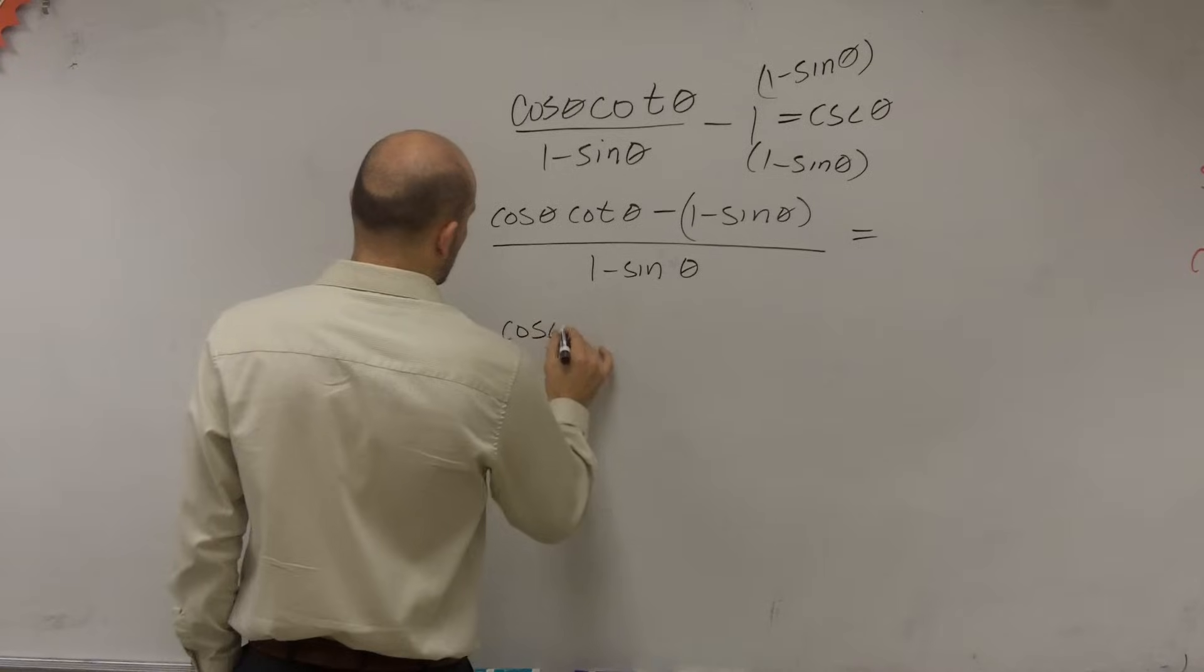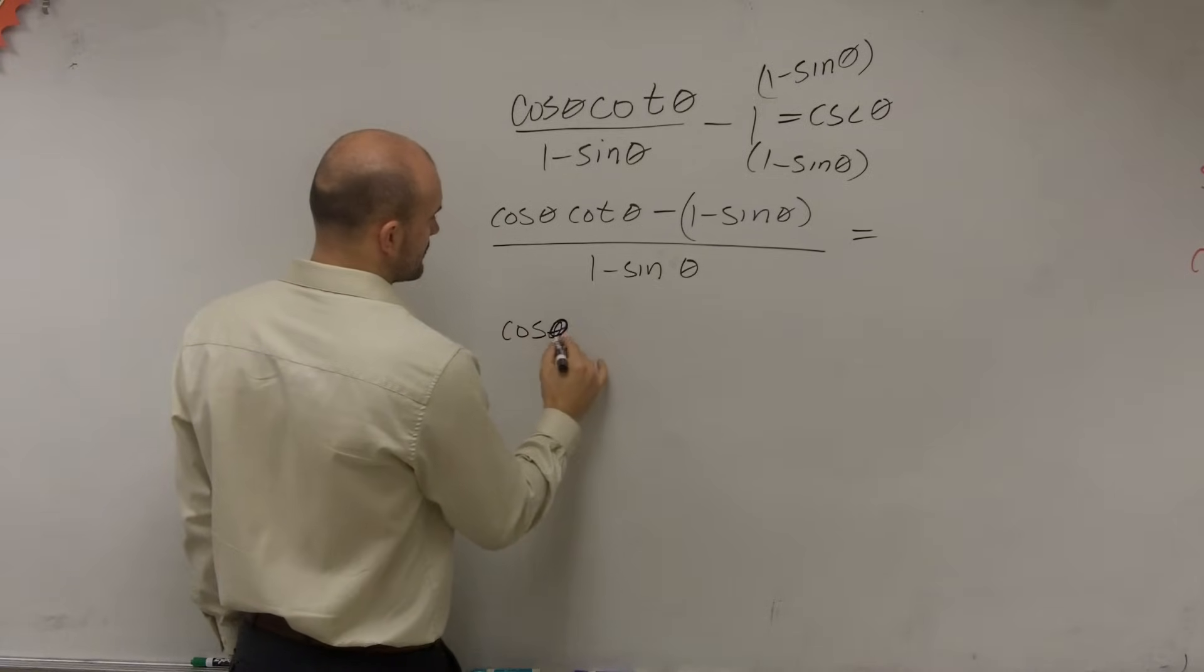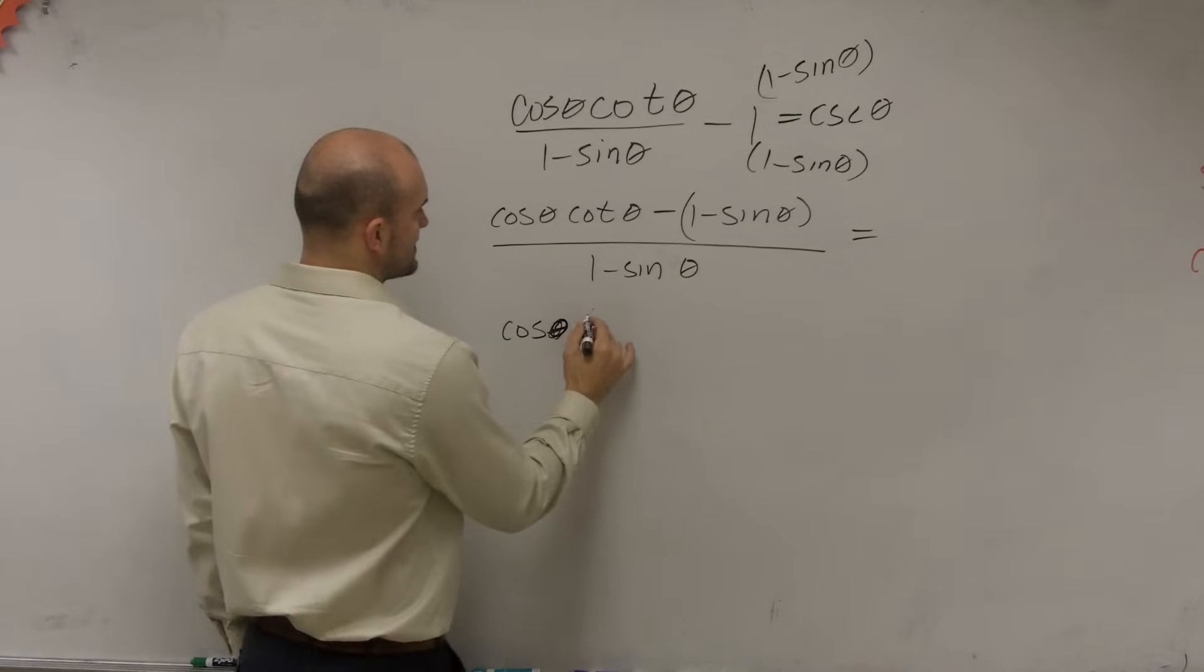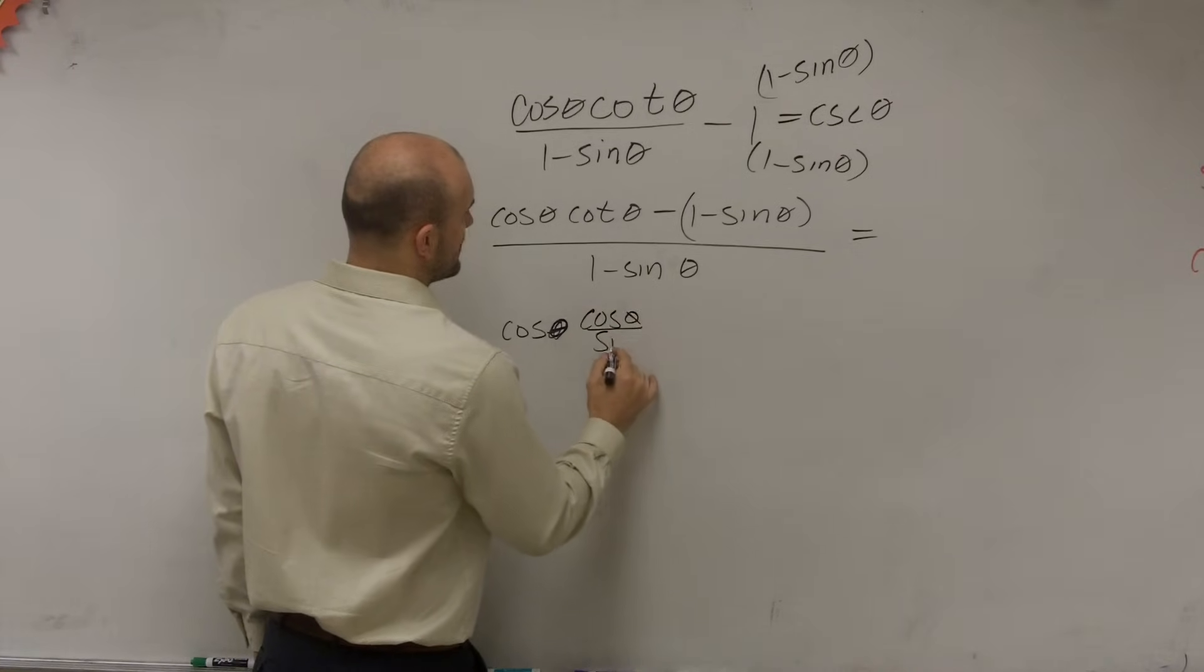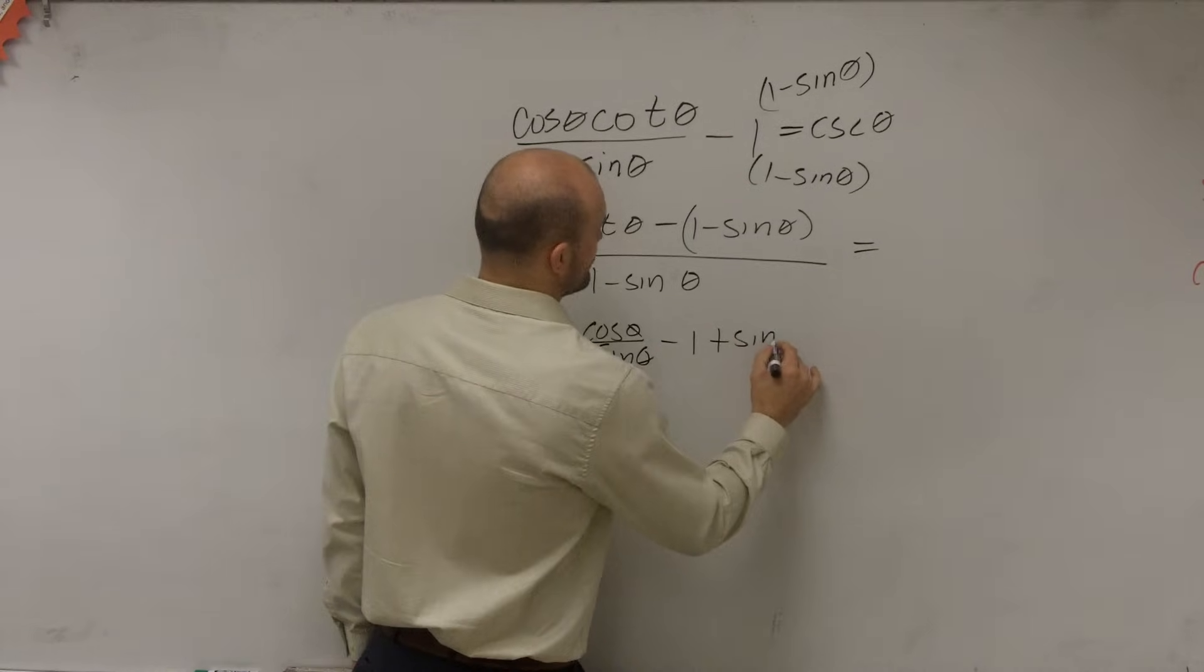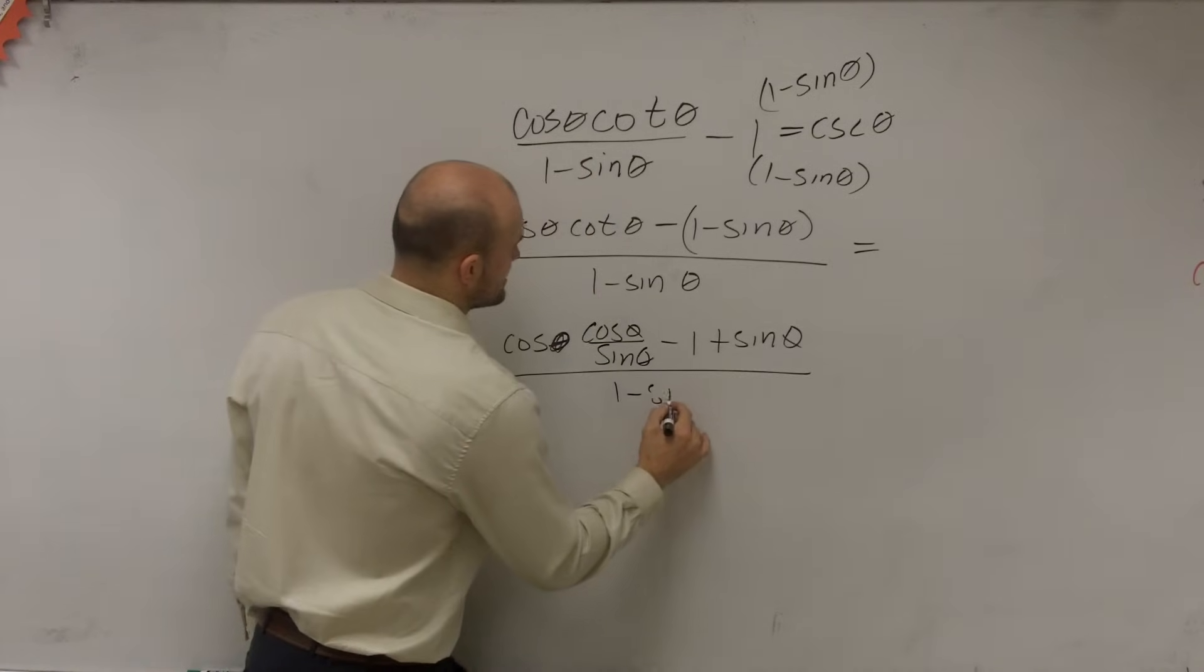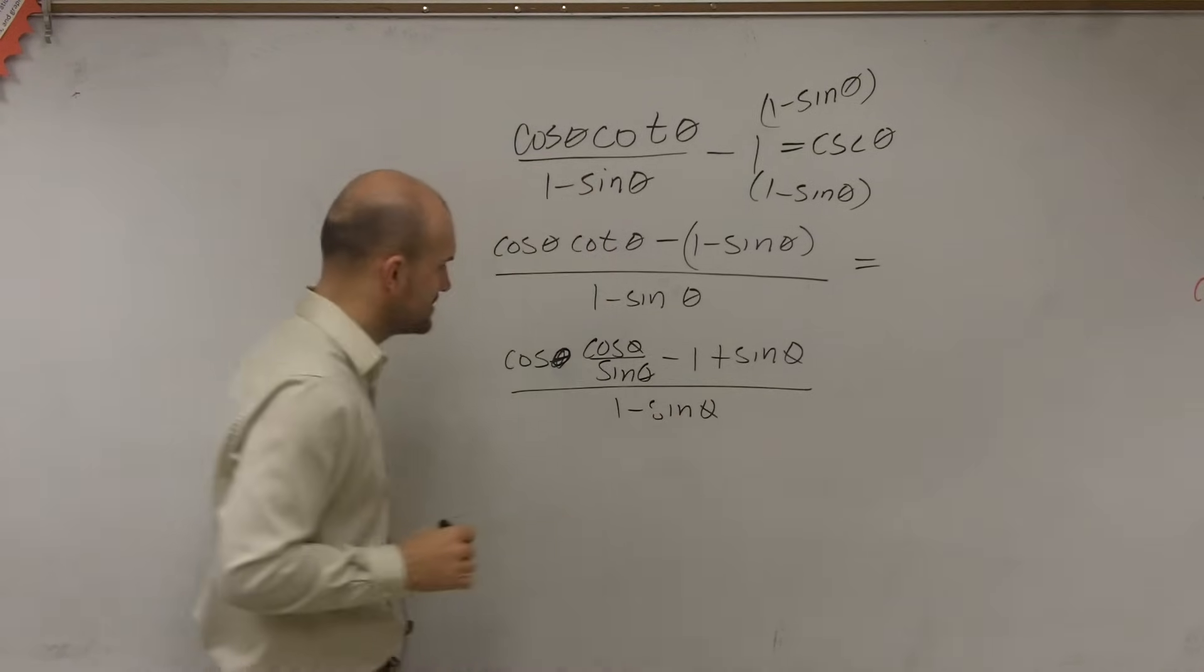So I could have cosine of theta times cosine of theta divided by sine of theta minus 1 plus sine of theta divided by 1 minus sine of theta.